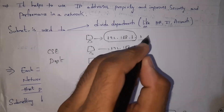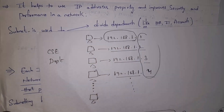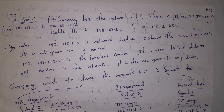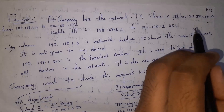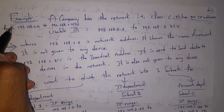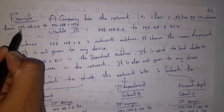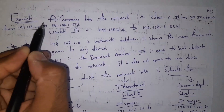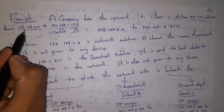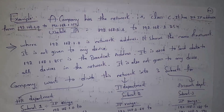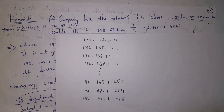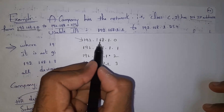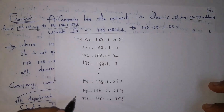What subnetting does is borrow some bits from the host part to make smaller networks. For example, let's say there is a software company network using Class C, where Class C has 256 IP addresses. The range is from 192.168.1.0 to 192.168.1.255. Since all devices belong to the same network, the network part does not change. From 0 to 255 there are 256 IP addresses total.